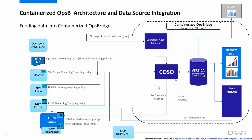Containerized OpsB's high-level architecture consists of CollectOnce StoreOnce, or COSO, which receives metrics, events, and topology data from various data sources, and sends data to the Operations Bridge Manager (OBM) and Performance Dashboard (PD). It also includes Vertica, which receives data from COSO, and Business Value Dashboard (BVD), which queries Vertica for data and displays it in reports. Third-party business intelligence tools can also be used to query Vertica for data and display it in reports.